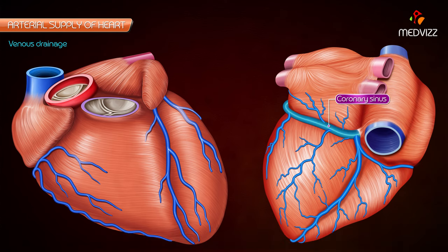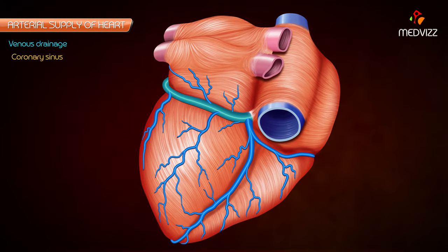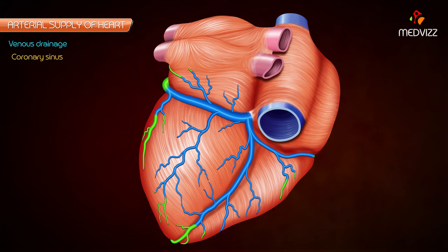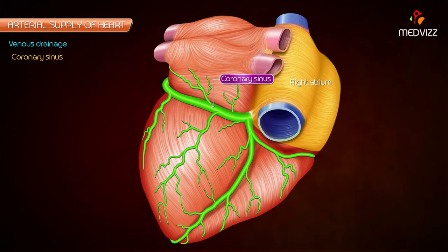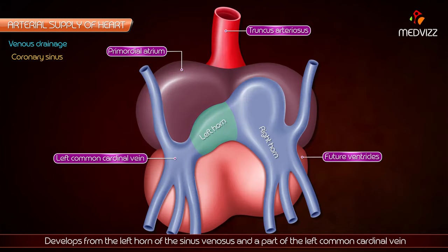Venous drainage of the heart: venous blood from the heart is drained into the right atrium by the coronary sinus, anterior cardiac veins, and venae cordis minimae (also known as the Thebesian veins). The coronary sinus is the principal and largest vein of the heart. It lies in the posterior part of the atrioventricular groove and develops from the left horn of the sinus venosus and a part of the left common cardinal vein.